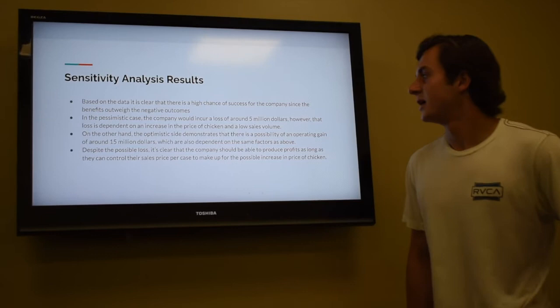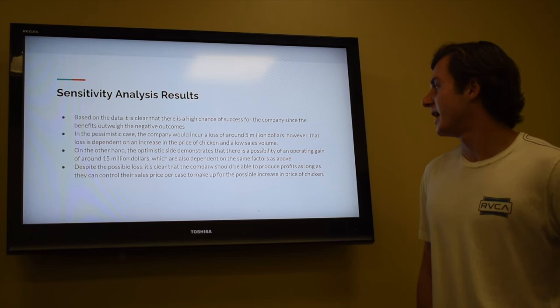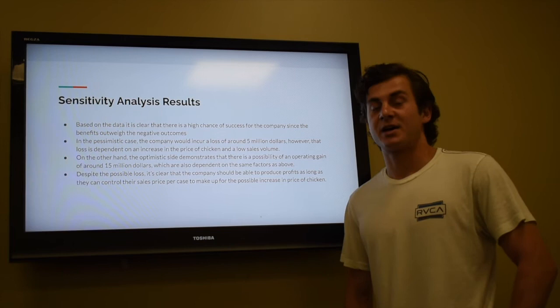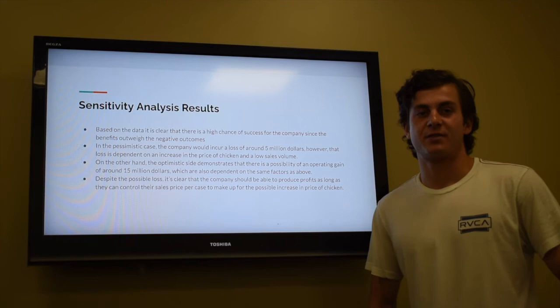On the other hand, in the optimistic case there's a possibility of an operating gain of around $15 million, which is a big difference compared to the pessimistic side. Despite the possible $5 million loss, it's clear the company should be able to produce profits as long as it can control its sales price per case to make up for any possible increase in the price of chicken.